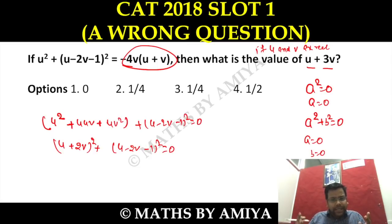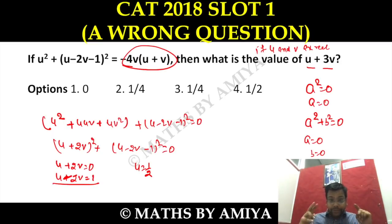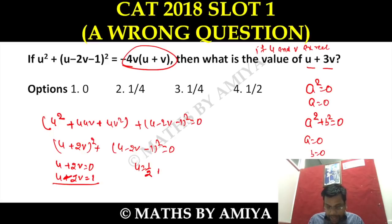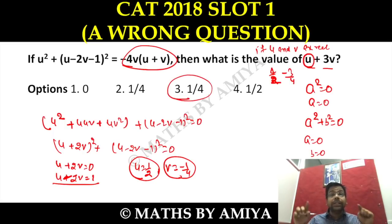Since we have imaginary numbers, if a is imaginary, the condition a² + b² = 0 does not force both to be zero. But from your assumption of u and v being real numbers, we can say u + 2v = 0 and u − 2v = 1. Solving these: u = 1/2 and v = −1/4. I am again saying: if u and v are real numbers — written explicitly — only then does this happen.